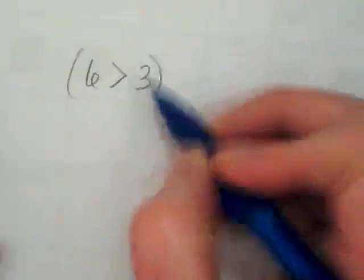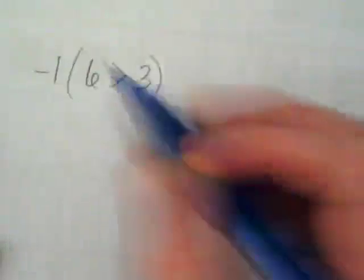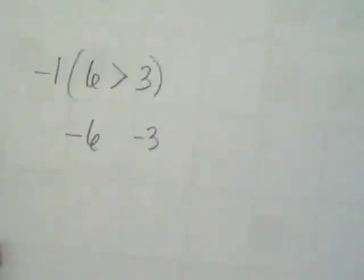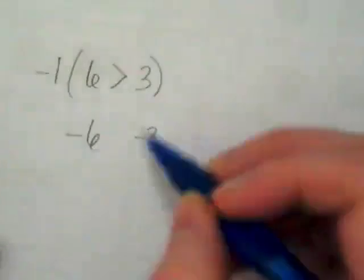What if I have to multiply this whole inequality by negative 1? This would become negative 6, and this would become negative 3. What would happen to the symbol? Why?